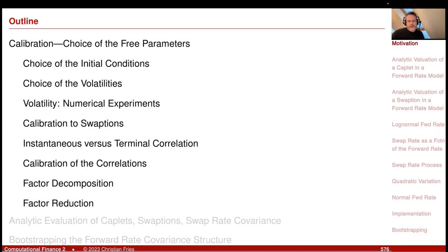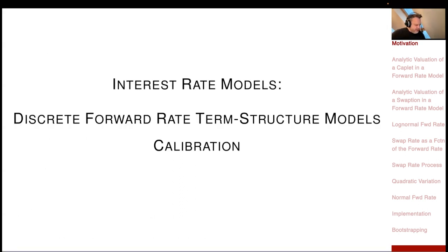We also tried to understand the model better by looking at what the parameters do — for example, the displacement parameter in a displaced log-normal model creates a slope in the implied volatility curve. But calibration is also associated with finding an analytic formula for the value of a financial product in terms of the model parameters.